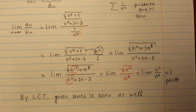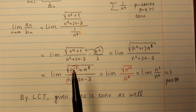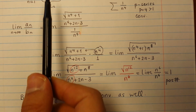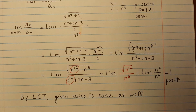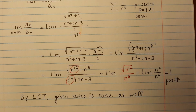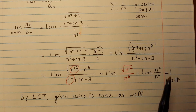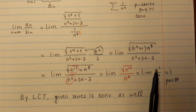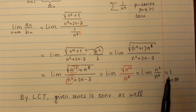So by the limit comparison test the given series is also convergent. That's the first example. You mainly fill up the remaining degree with 1 over n to the 4 to make the limit positive — the original limit would be 0 because the denominator has the larger degree, but once you fill it up to n to the 6 you get a positive limit and the limit comparison test applies.